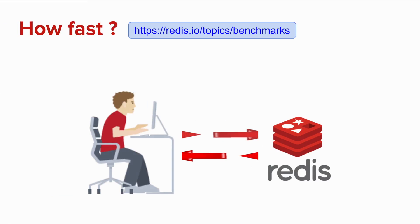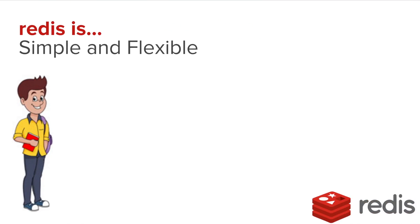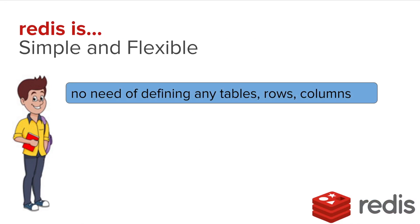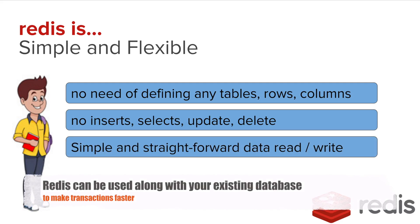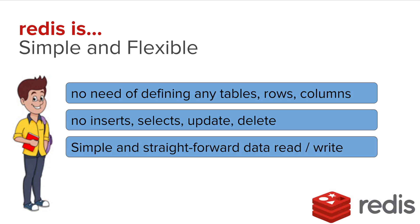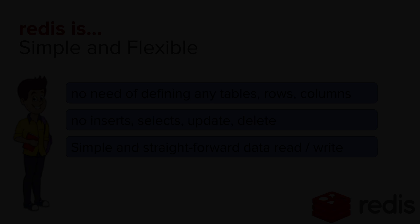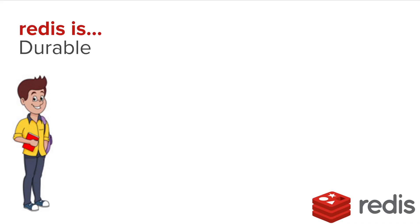So Redis is really, really fast and this is one of the major features of using Redis. Let us look at how simple and flexible Redis can be. Redis is a NoSQL data store. There is no need of defining any structures like tables, rows or columns. And there is no need of any statements like insert, select, update and delete. The data read and write in Redis is very, very simple and straightforward, and we do this through commands.